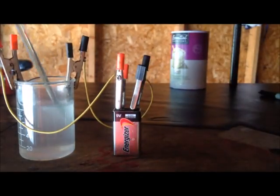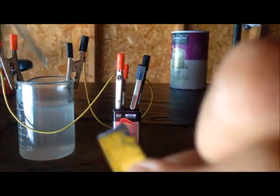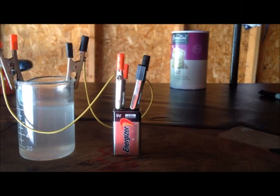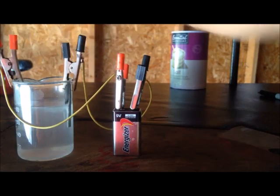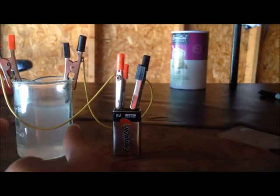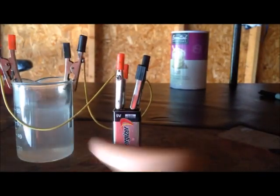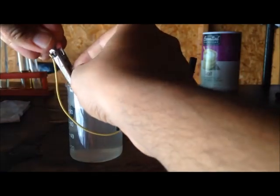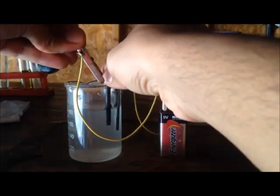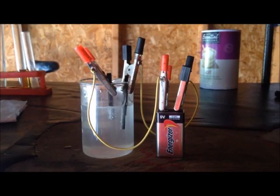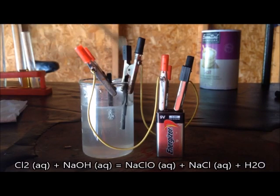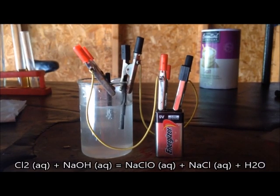To form bleach, we need a second reaction. These electrodes are a little apart from each other, so I'll move this anode near the cathode. The second reaction is between the chlorine gas from the anode and the sodium hydroxide in the solution. The two will react to make sodium hypochlorite or bleach and other products like sodium chloride and water.